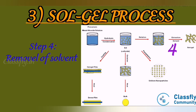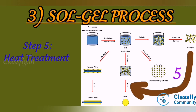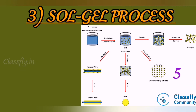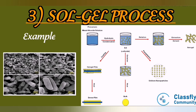Step 4: Removal of solvent. The encapsulated liquid can be removed from the gel by evaporative drying. Step 5: Heat treatment. The sample is heat-treated, i.e. calcinated, at high temperature to obtain nanoparticles with size ranging from 1 to 100 nanometers. For example, titanium dioxide nanorods are prepared by the sol-gel method using AAO, i.e. anodic aluminium oxide.